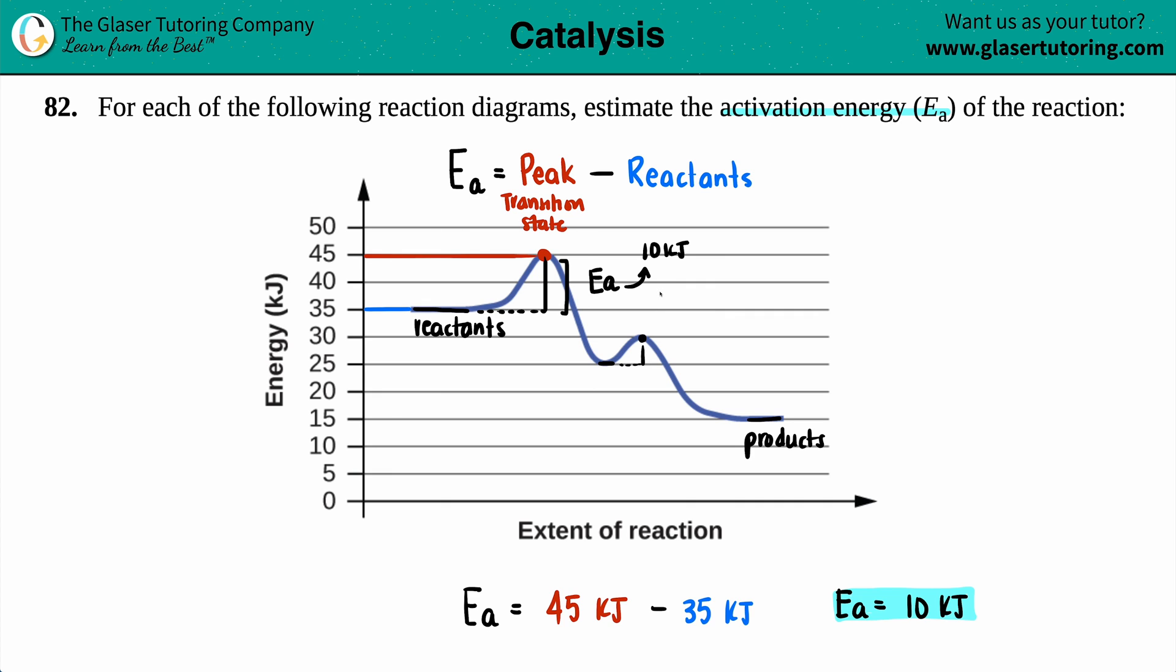But other than that, I think we're good to go. The other thing that I just want to say is activation energies should always be a positive value. So if you accidentally do 35 minus 45 and you get negative 10, just take the absolute value because the activation energy will always be positive. And that's it.